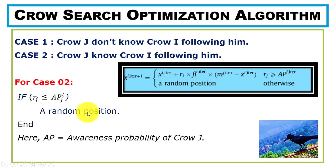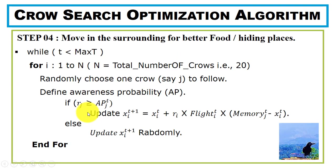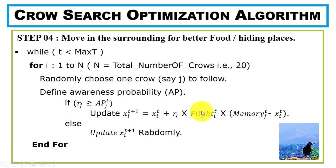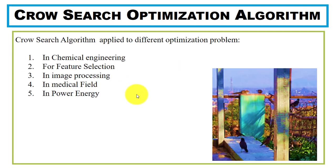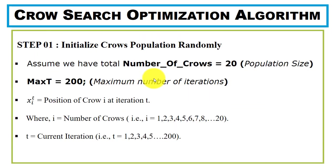In the MATLAB implementation, we check the condition using a loop that repeats until the current iteration reaches the maximum iteration. If the condition is true we update using the main equation, else we update randomly. In step 5 we compute the fitness value for the new solution, then update the position and memory of each crow and display the best value. This algorithm can be applied to different optimization problems including chemical engineering, image processing, and power engineering.